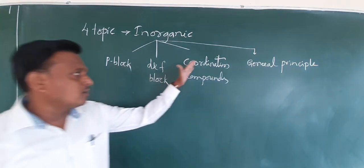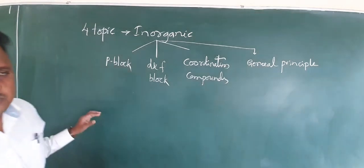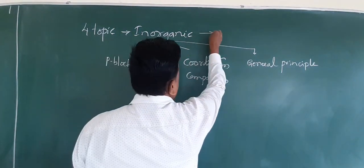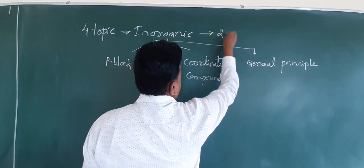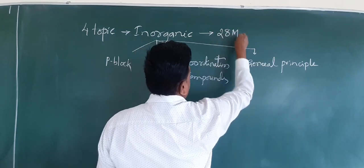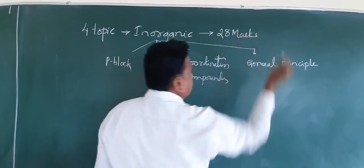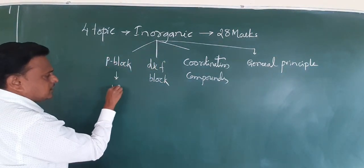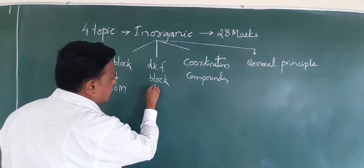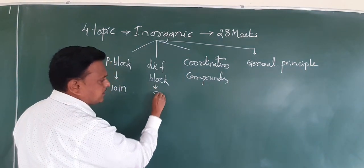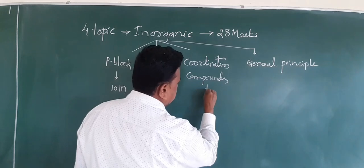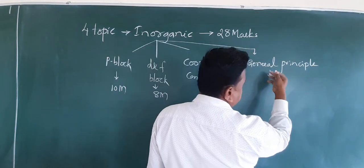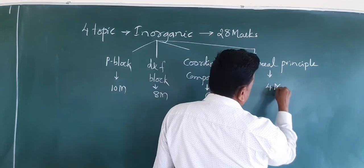P block, D and F block, coordination compounds, and general principles come under inorganic chemistry. The total marks for inorganic chemistry is 28 marks, further divided as: P block is 10 marks, D and F block is 8 marks, coordination compounds is 6 marks, and general principles is 4 marks.